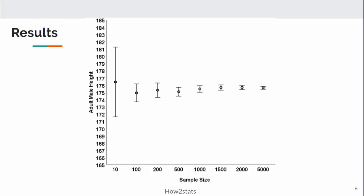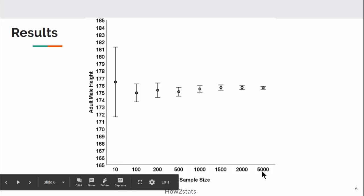So here are the results, and what I presented is basically a mean and confidence interval chart, where on the x-axis, I've got sample size going from 10 all the way to 5,000. And I've also got adult mean height on the y-axis.